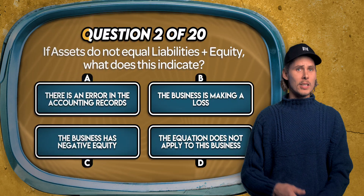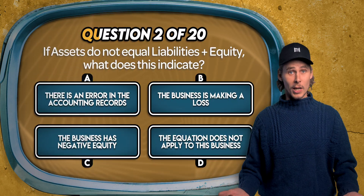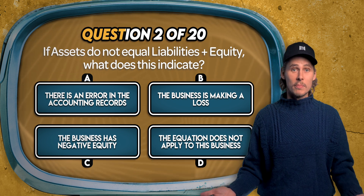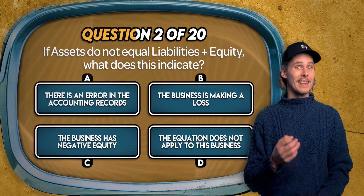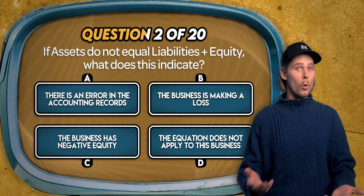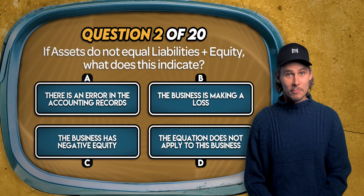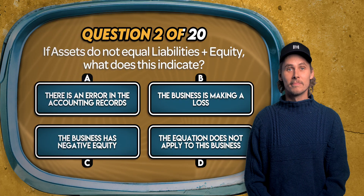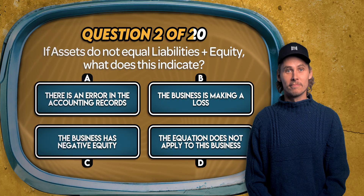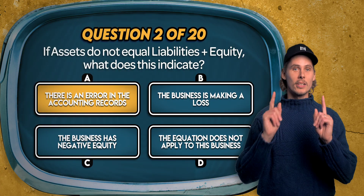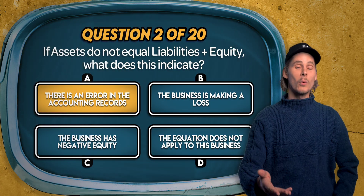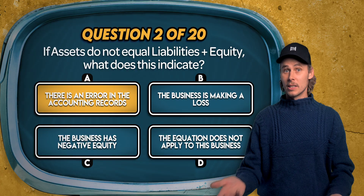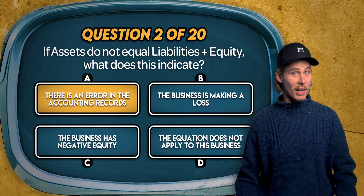Question 2. If assets do not equal liabilities plus equity, what does this indicate? That there's an error in the accounting records, that the business is making a loss, that the business has negative equity, or that the accounting equation doesn't apply to this business? The answer is A. The accounting equation always has to balance, so if assets don't equal liabilities plus equity, then something has been recorded incorrectly.